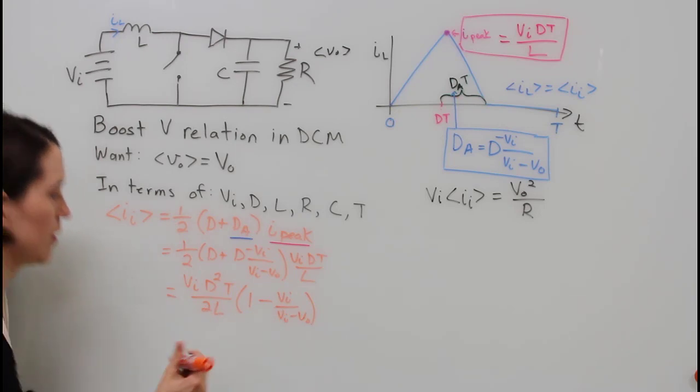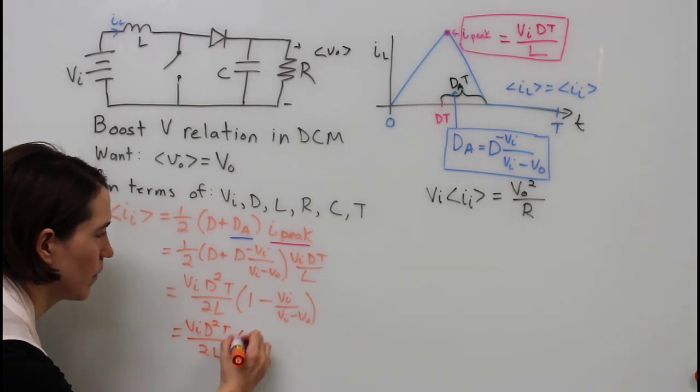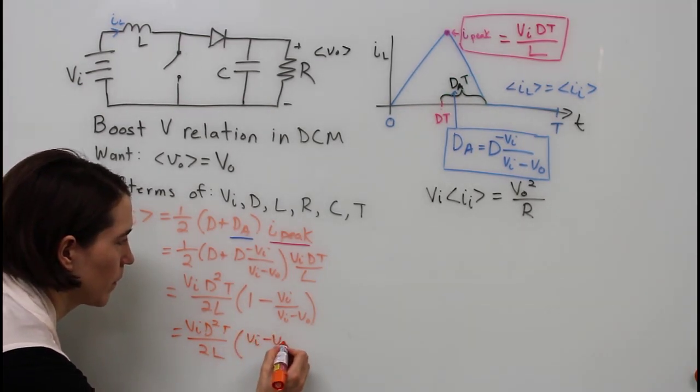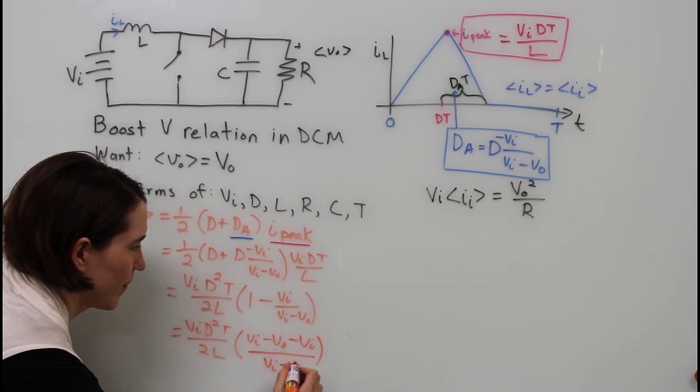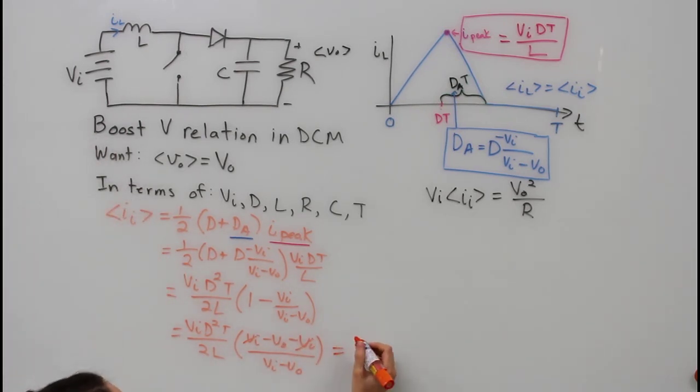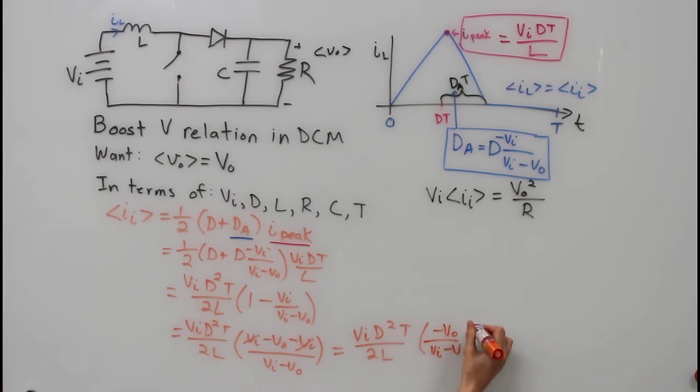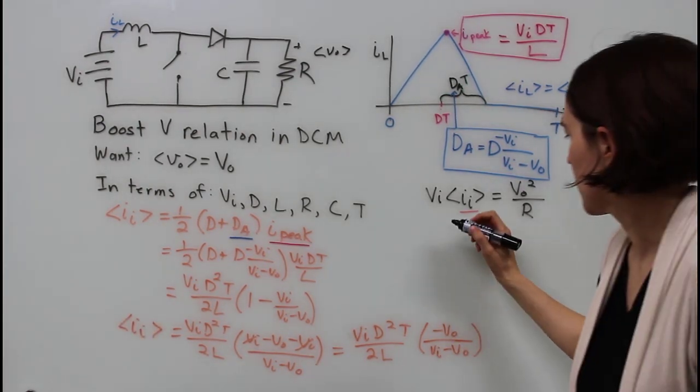From here we can simplify this expression a little bit more. We're putting everything under one denominator and then we'll simplify some terms which we'll cross out. My ghost hand will write the final expression here. In the parentheses has been simplified significantly to a negative V out over V in minus V out. So now I can take this expression we found and put it back into the average input current for the power balance equation.